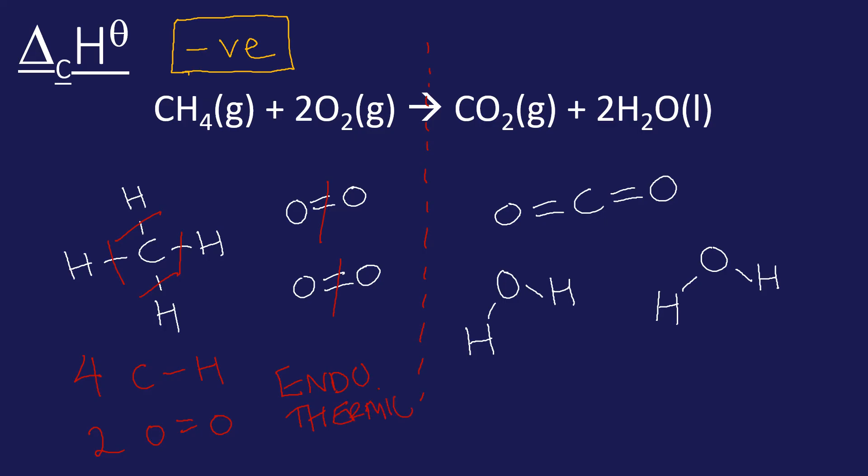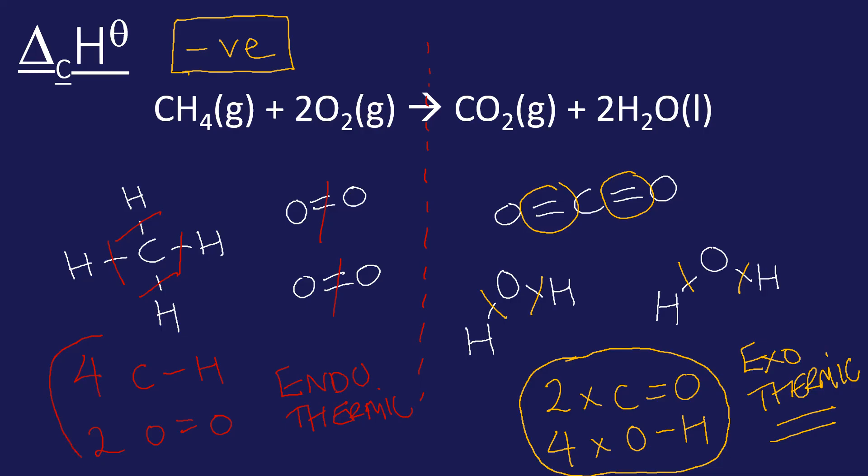When we go across to the product, we're going to form this bond and form this bond—that's two times C double bond O's—and we're going to form these four O-H bonds, and that's going to be an exothermic process. Now because this reaction overall is exothermic, we can make the prediction and the conclusion that the energy released when these bonds were formed was greater than the energy required to break these bonds.